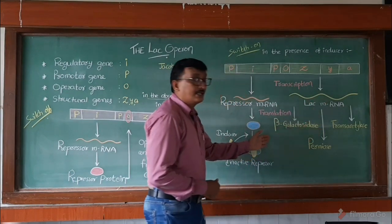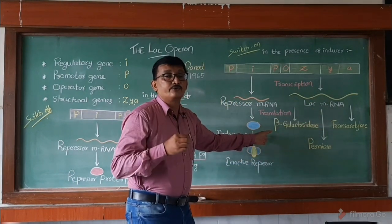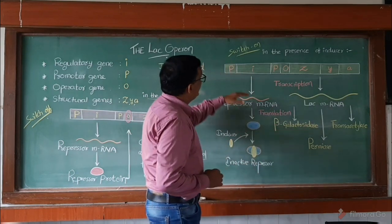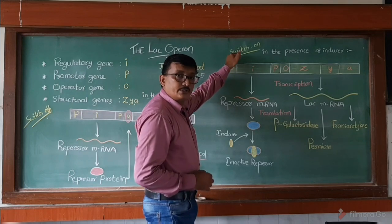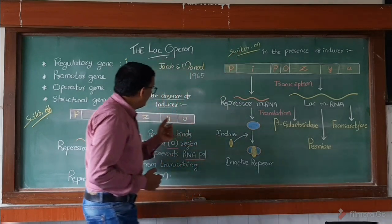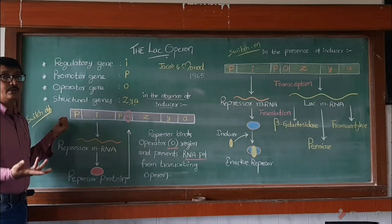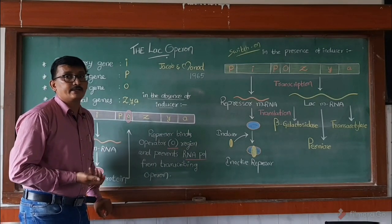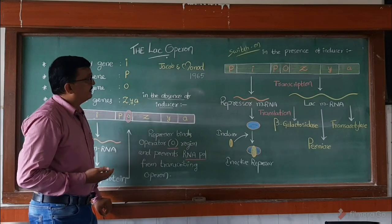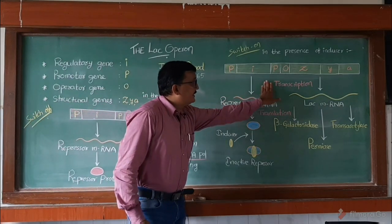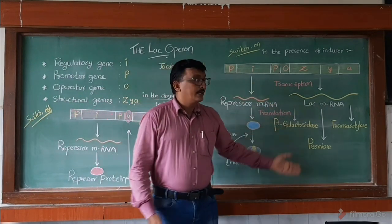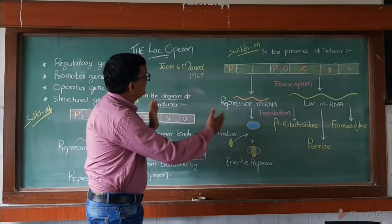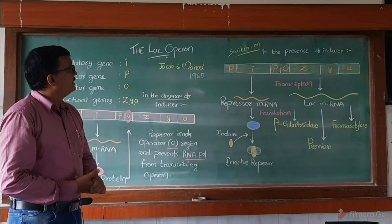This entire process occurs in the presence of lactose — whenever lactose is there in the medium, then only it occurs. This is called the switch on condition. The switch off condition means there is no lactose and no secretion of enzymes — why would enzymes secrete unnecessarily when there is no lactose? But when lactose is present, enzymes are secreted and they complete the metabolism of lactose. This is the hypothesis of the lac operon.